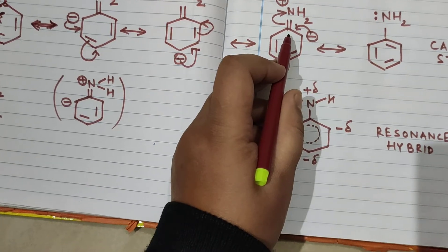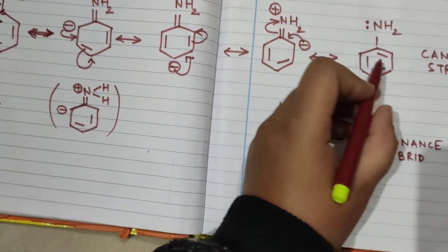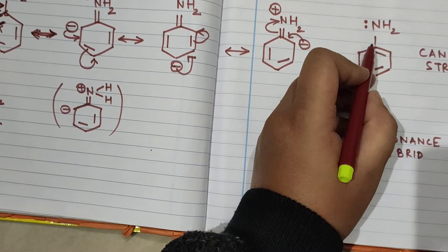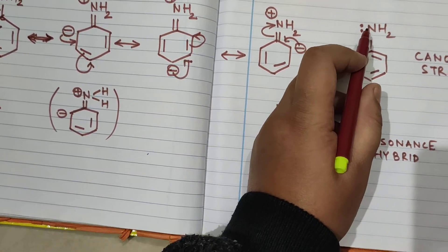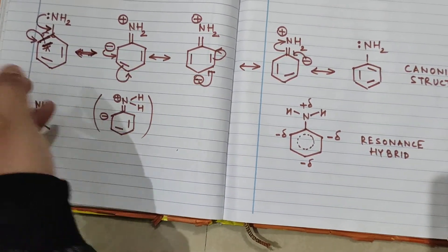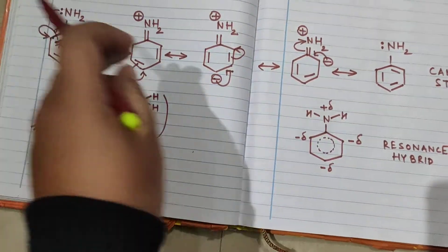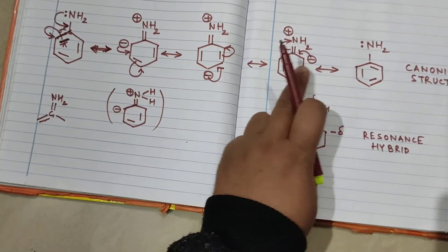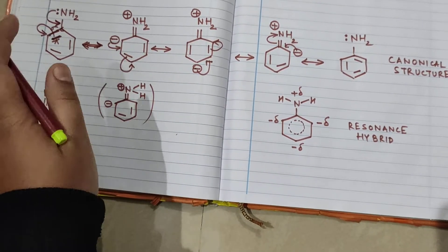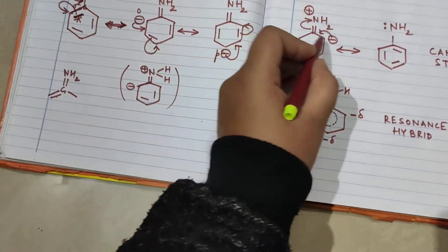In the next structure, the bond forms a charge and the charge that was there forms a bond. The bond which was present is broken and given back to nitrogen. Looking at structures three, four, and five, the only difference is the position of the bond. All the structures — one, two, three, four, and five — are called canonical structures. The charges appear on the ortho position, then para position, then ortho position again.